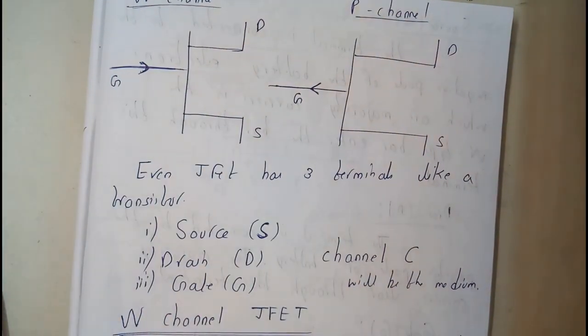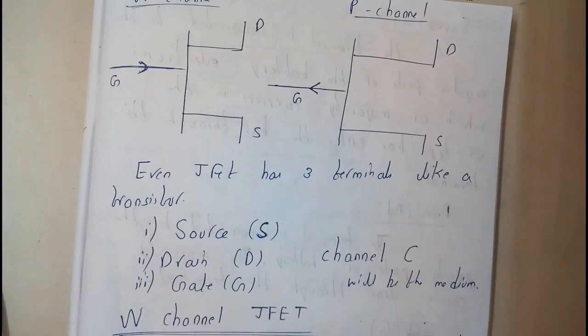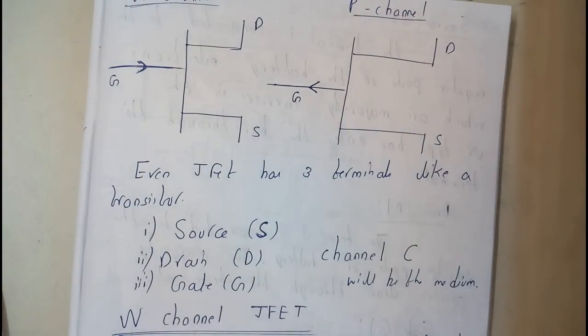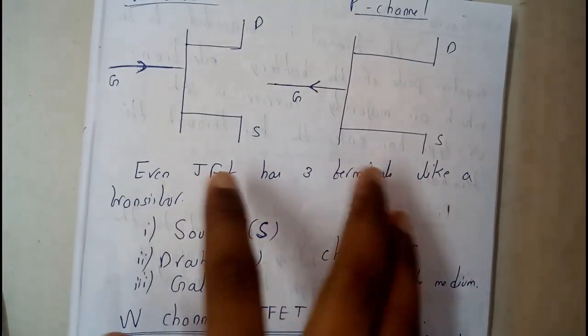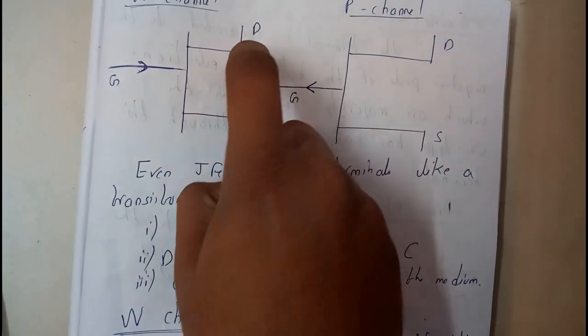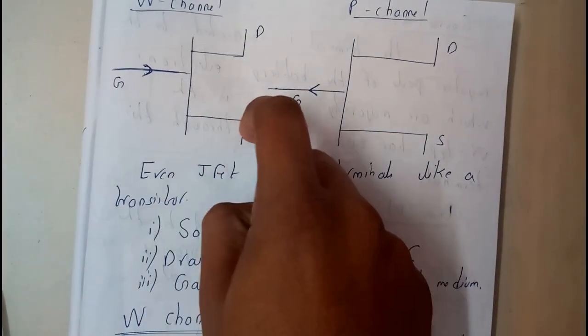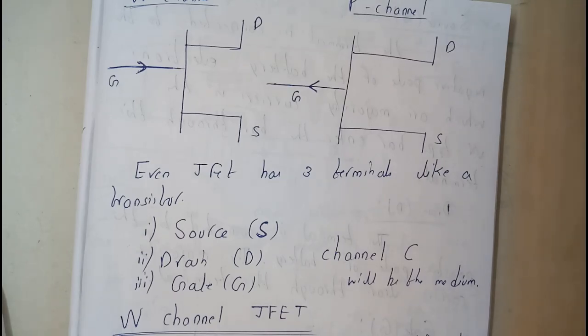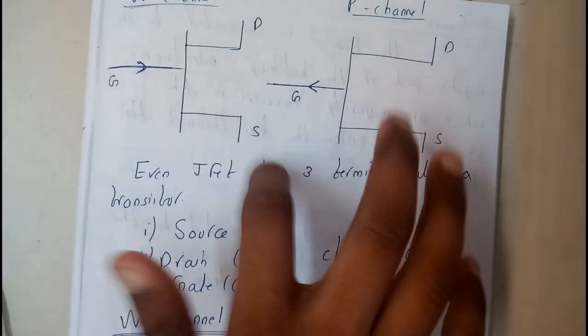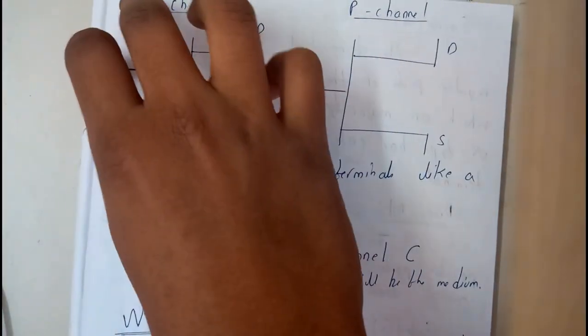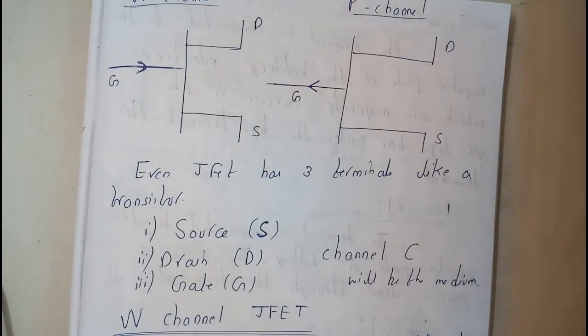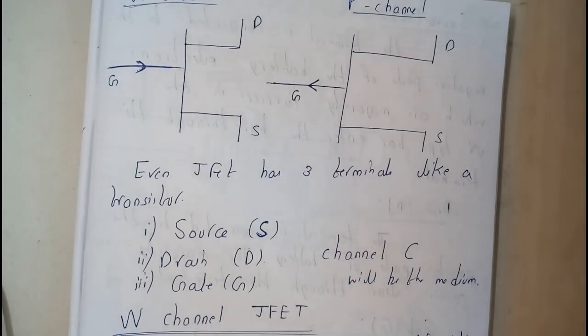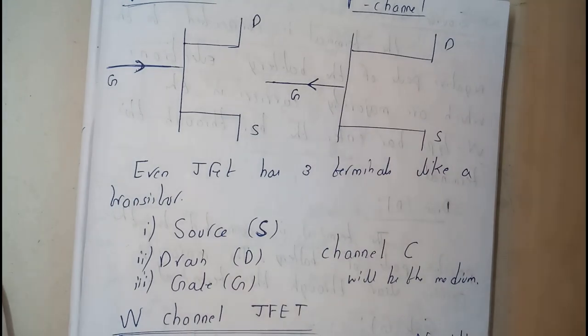That's the major difference. There we used some slant lines, but here we are using sharp lines. That's the major difference between n-channel and p-channel. Drain, gate, source - even if you shuffle, drain, gate, source, that's it. Now I hope everyone is 100% clear with the basic block diagram.